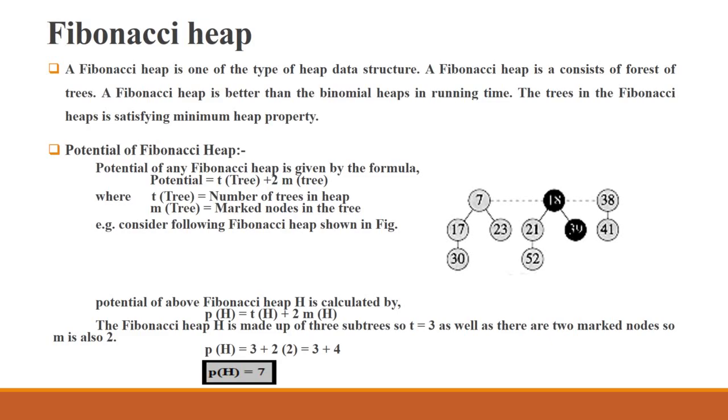The next point is potential of Fibonacci heap. How to find the potential of Fibonacci heap? The formula is: potential equals to t of H plus 2 into m of H, where t of H equals to number of trees in heap and m of H is marked nodes in the tree.